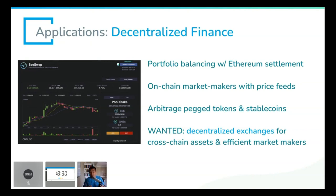The decentralized exchange we want to help you build is really for cross-chain assets — whether from Binance Smart Chain, Polkadot, and Cosmos very soon, but also Ethereum. We want to make all the market makers efficient. Let me tell you a few more ideas.